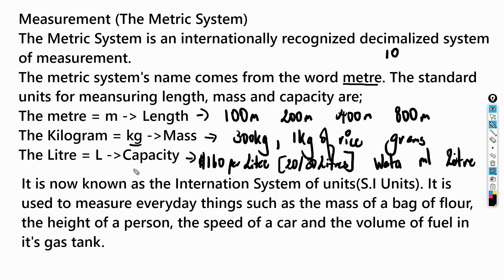It is now known as the International System of Units, or SI units. SI units are the units we use to measure all things under the decimalized system. It's used to measure everyday things such as the mass of a bag of flour, the height of a person, the speed of a car, and the volume of fuel in its gas tank.